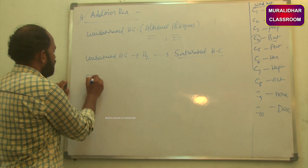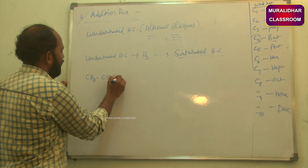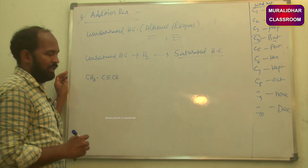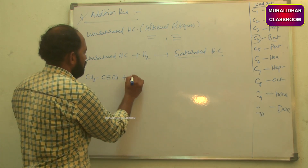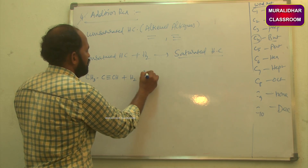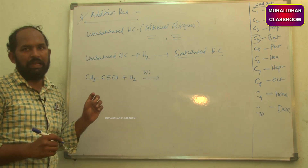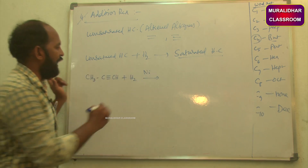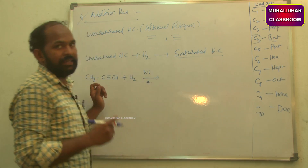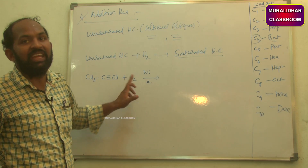For example, propyne (CH3C≡CH), an alkyne, reacts with one H2 molecule in the presence of nickel (Ni) as a catalyst. The catalyst nickel regulates the rate of the reaction — it does not itself undergo any chemical change. The pi bond of the triple bond breaks and two hydrogen atoms attach to the two carbons.